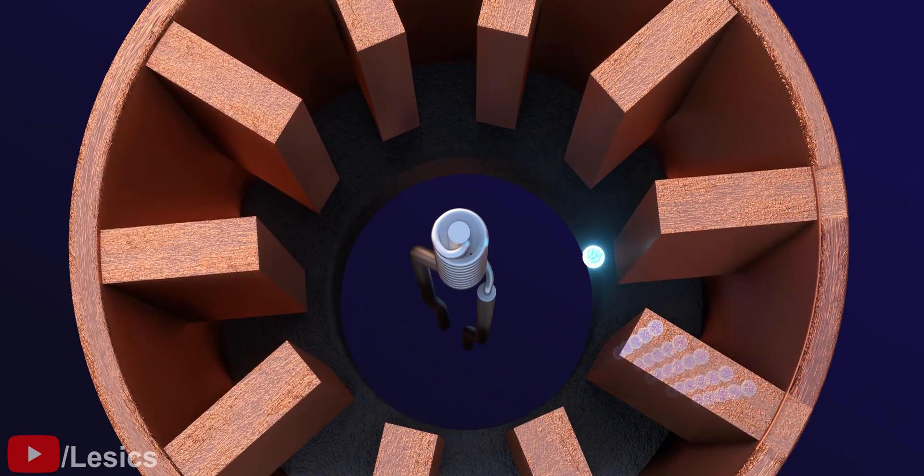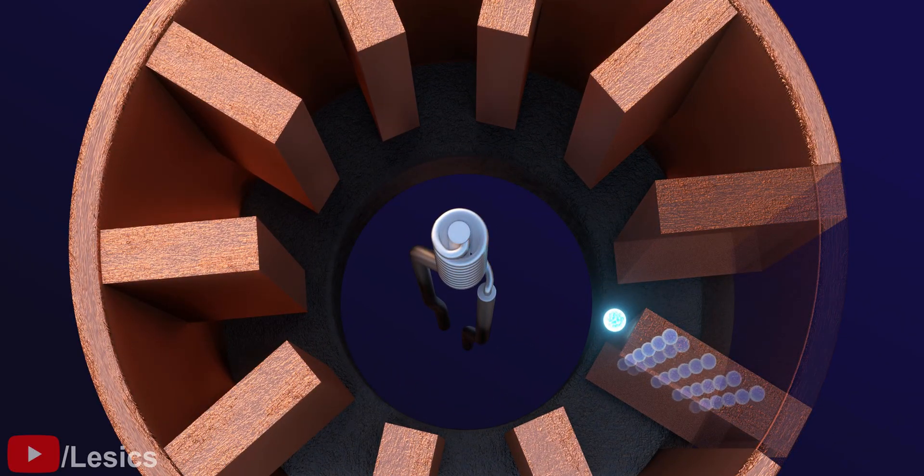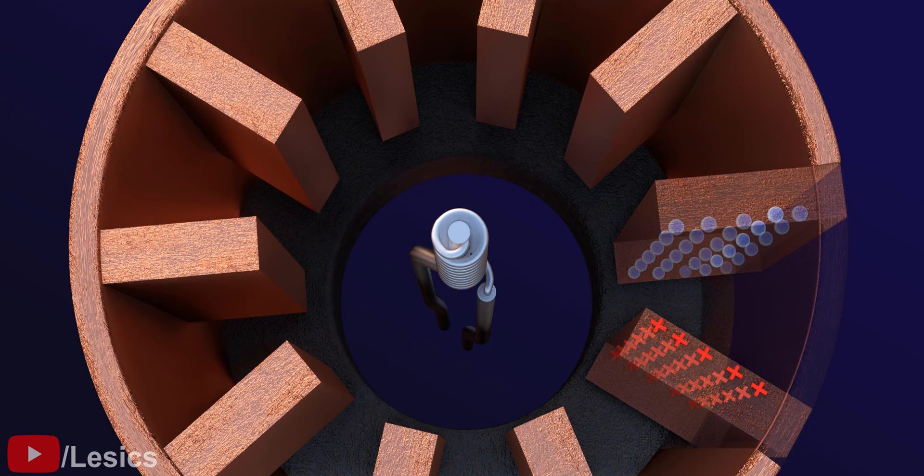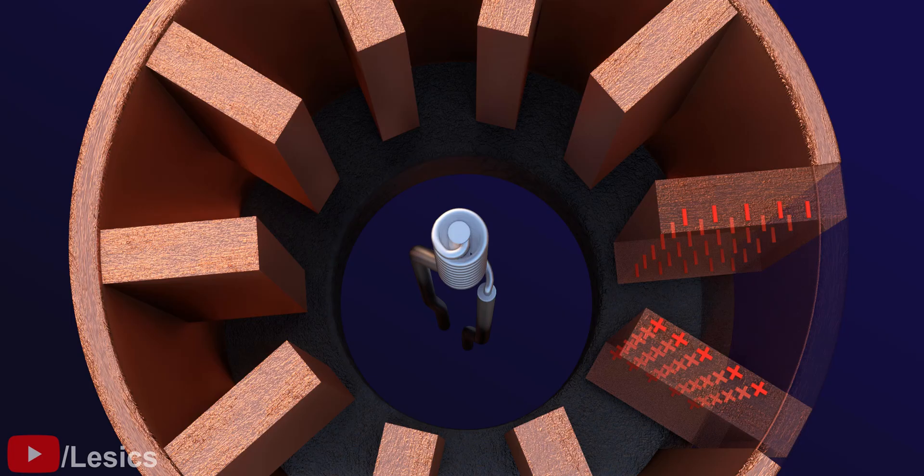When the electron comes towards the anode, it repels the nearest cavity's electrons. Due to this electron displacement, positive charges form on that surface. The displaced electrons will obviously make a surface of negative charges on the nearby cavity.